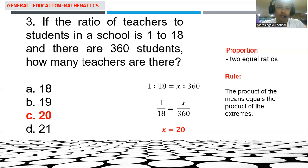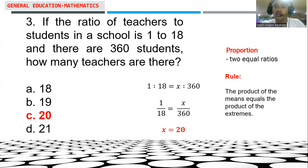So the result is: if the ratio is 1 is to 18 and there are 360 students, then the number of teachers is equal to 20. We can say that 1 is to 18 is equal to 20 is to 360.